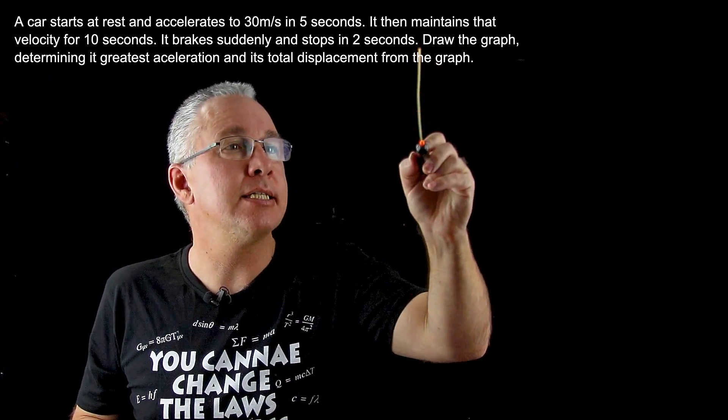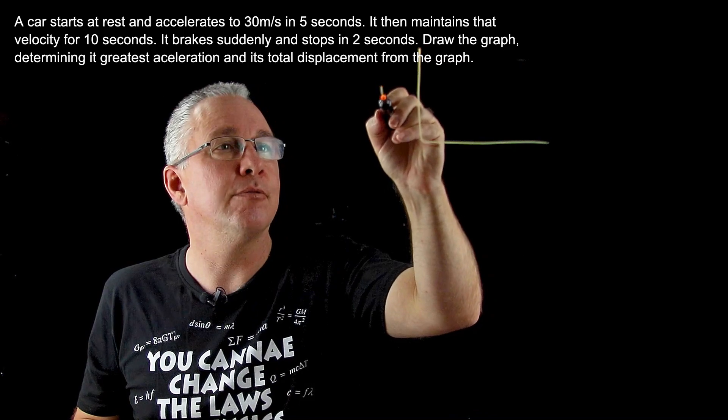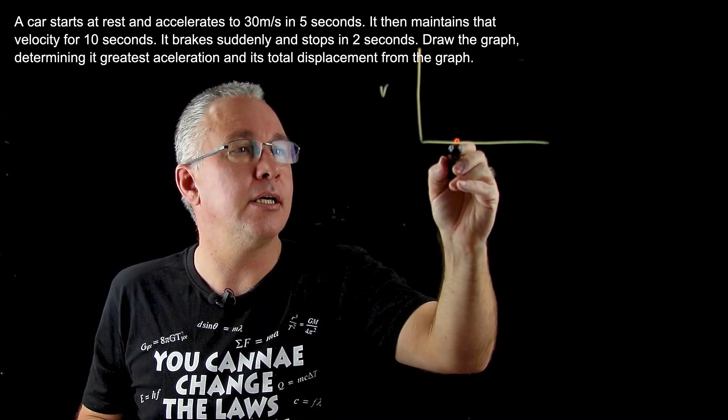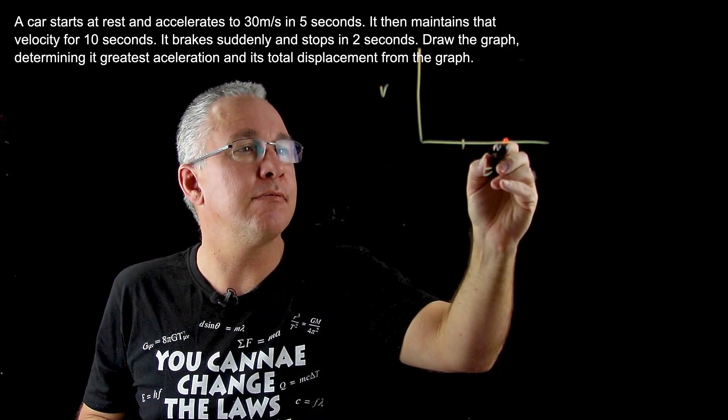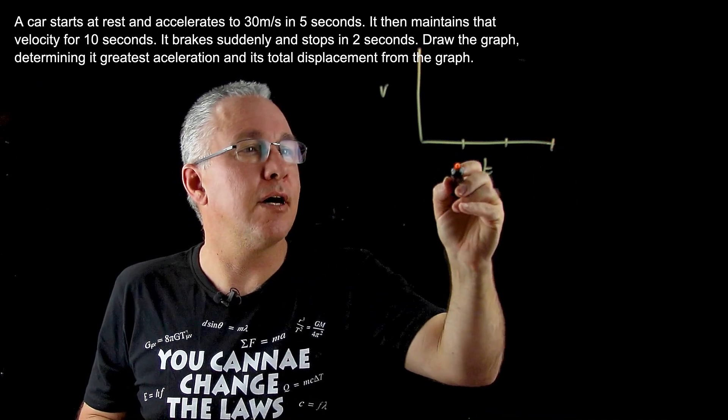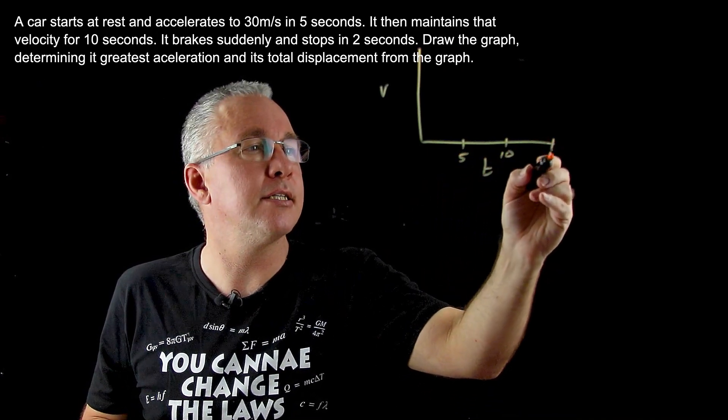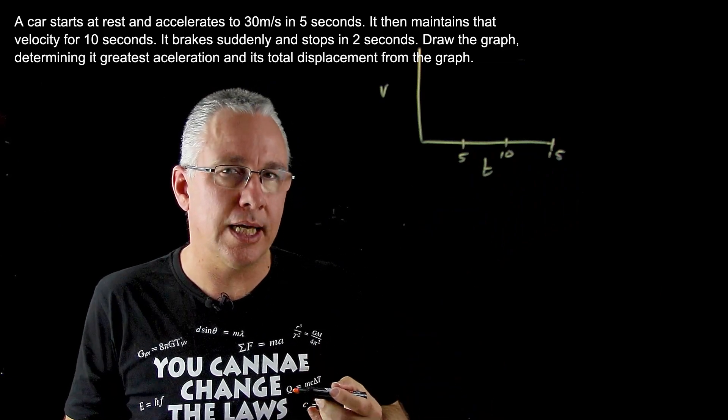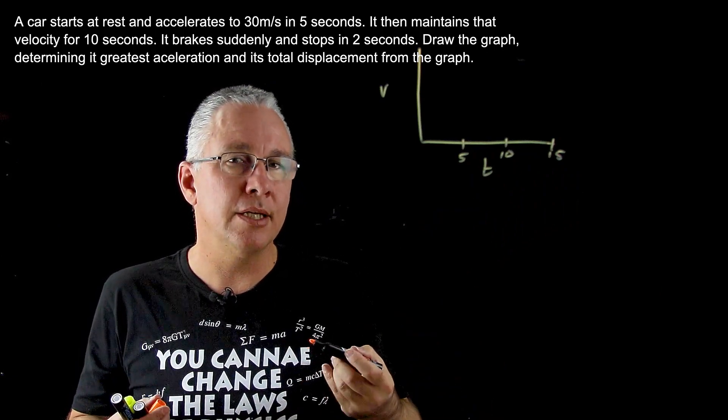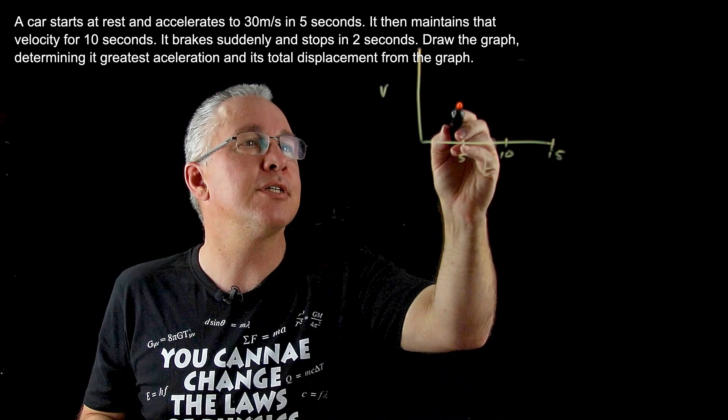We'll start with our axes. I'm going to put velocity on this side and time over here, spacing this out roughly about 5 seconds apart. So this is 5, this is 10, and this is 15. We're told that the car accelerates from rest to 30 meters per second after 5 seconds.